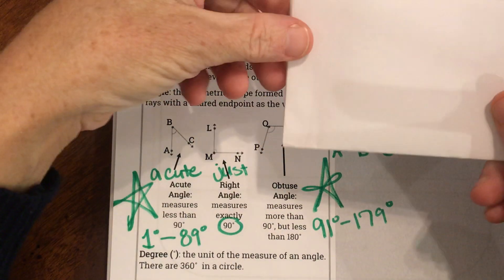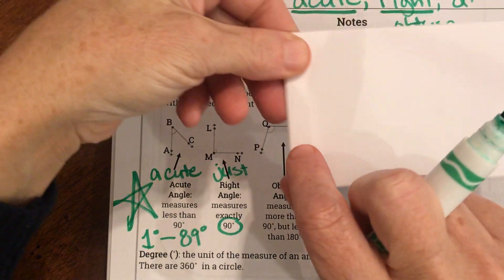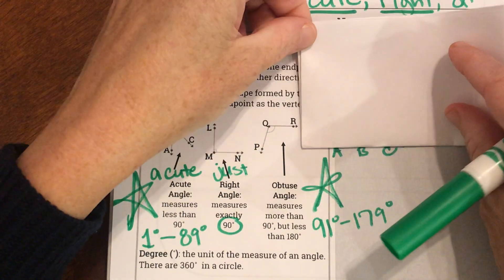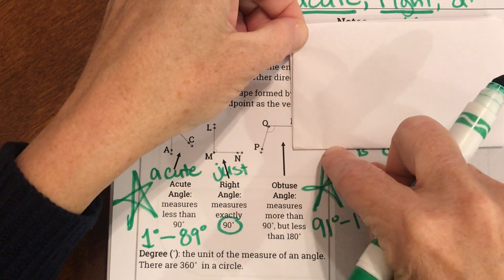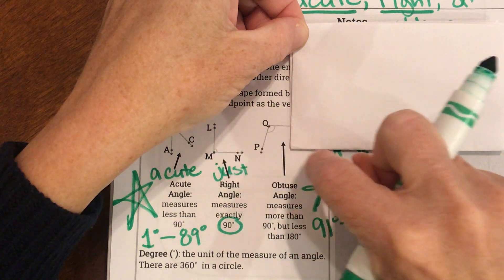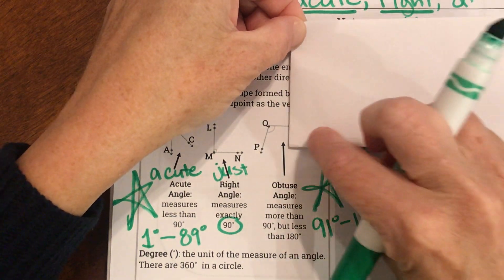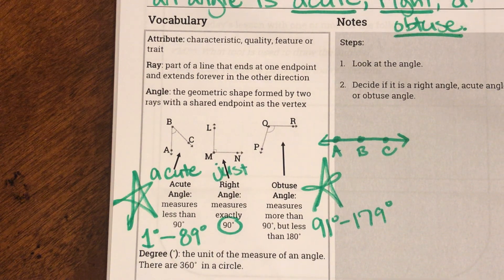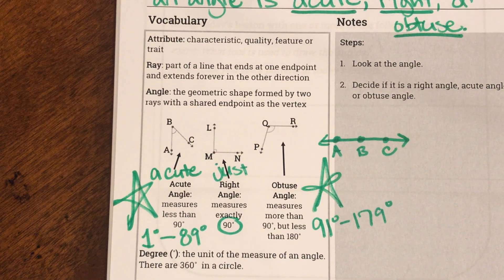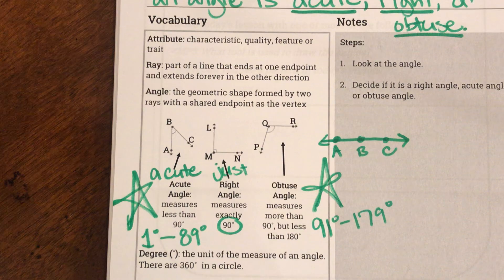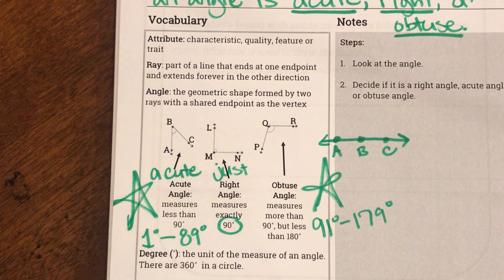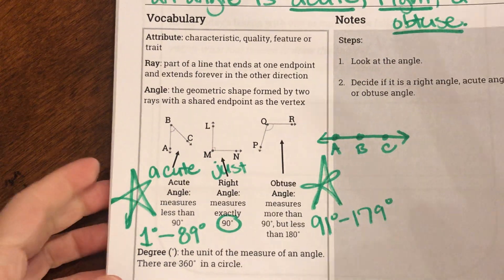I definitely recommend, ladies and gentlemen, using some sort of post-it note, or the corner of a paper, because this is a great way to always look at it and think, is it 90, or is it larger than 90, or is it smaller than 90? So, if you want to pause the video and see if you could find a post-it, or just the corner of a piece of paper, that might be helpful.